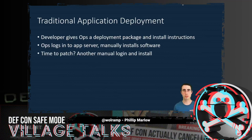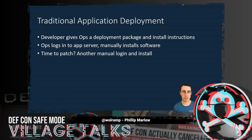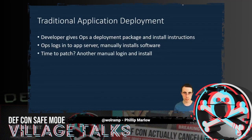So how does traditional application deployment work? Developers give Ops a deployment package and hopefully some install instructions. Ops then logs into the application server and manually installs the software. Then an update comes along — you log in and update. A security patch comes along — you log in and update again. This manual logging in and updating is going to be a real problem for detecting lateral movement.